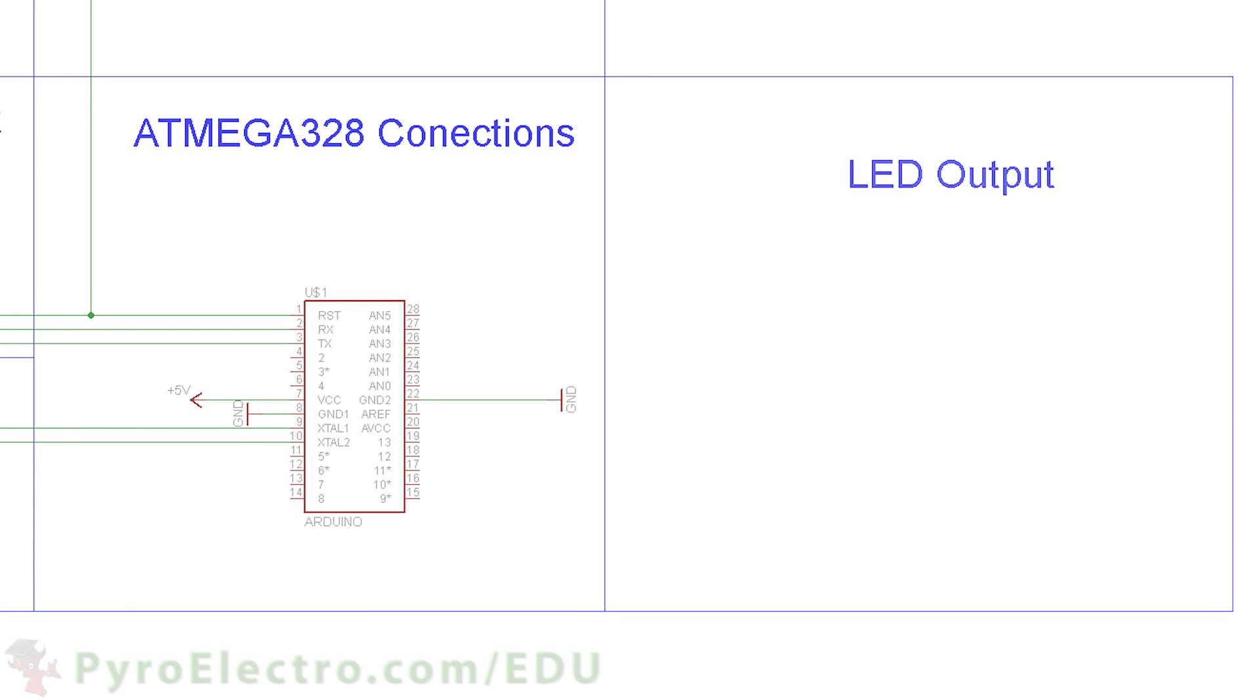The last portion of the circuit is the LED output and push button input. The LED output consists of a resistor and LED. Pin 13 connects to the resistor which connects to the LED, and then the LED goes to ground.